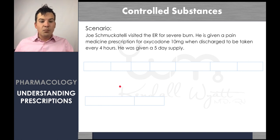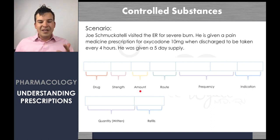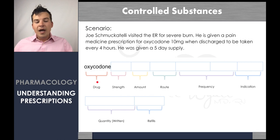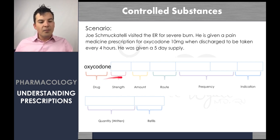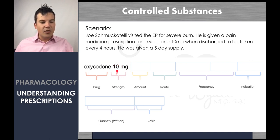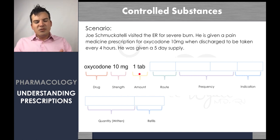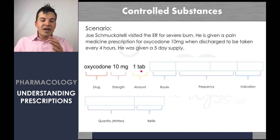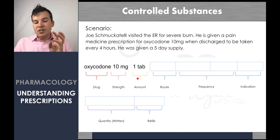Let's run through it together. The drug is oxycodone — a schedule controlled medication with moderate to high risk of abuse. The strength: oxycodone comes in a 10 milligram tab. The amount: one tab. If the pharmacy only has five milligrams, they'll automatically change it to two tabs of five milligrams because that's the same total amount. You want to assure that whatever dose is on there is correct and pick the right tab for what's available. So: oxycodone 10 milligrams, one tab.